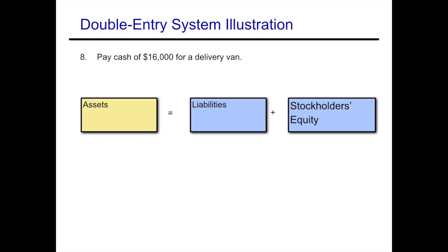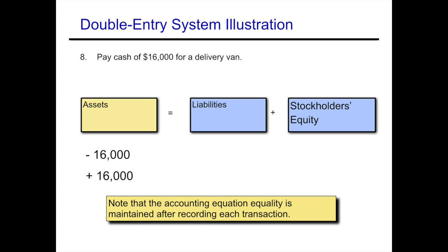Example eight: pay cash of $16,000 for a delivery van. Cash is going down by $16,000 and we're receiving a delivery van, which is also an asset. In this case, there's no net effect on the accounting equation because assets are going down and up by the same amount — different assets, but only assets are being affected. Note that during each transaction, the accounting equation was always in balance. Thank you.